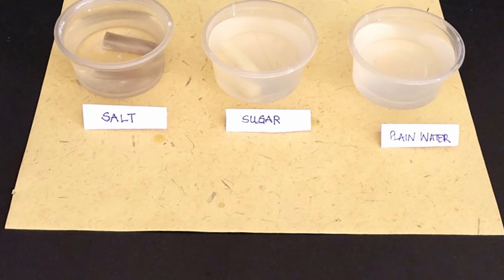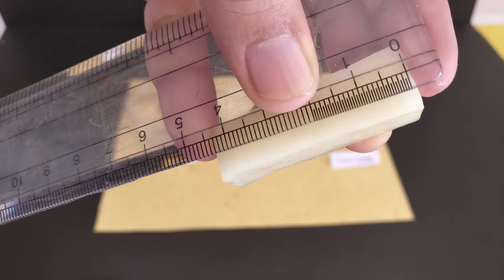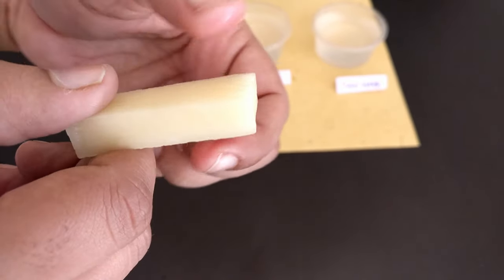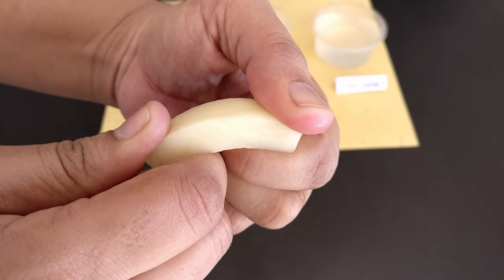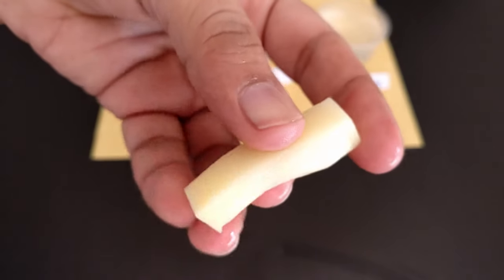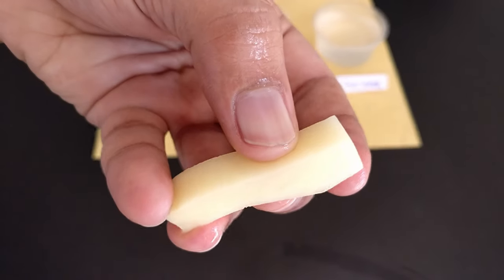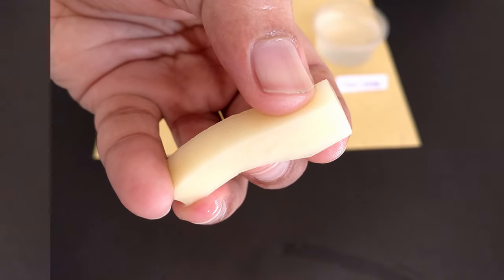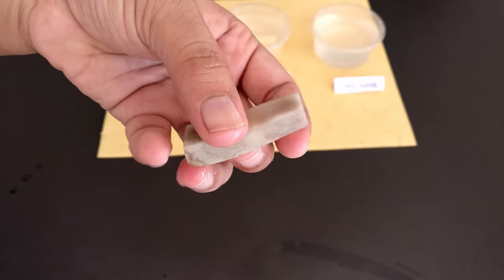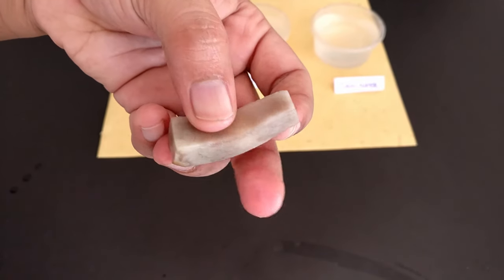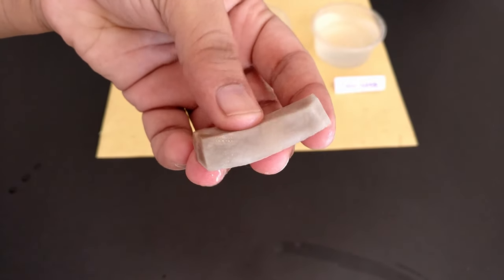The strips have been sitting in the cups overnight now. We will remove the strips from the cups and check for any changes they have undergone. The strip from the clean water cup has become larger than before and is much firmer. The strip from sugar water has become considerably soggy. The strip from salt water has discolored and has become very soggy and bends very easily.